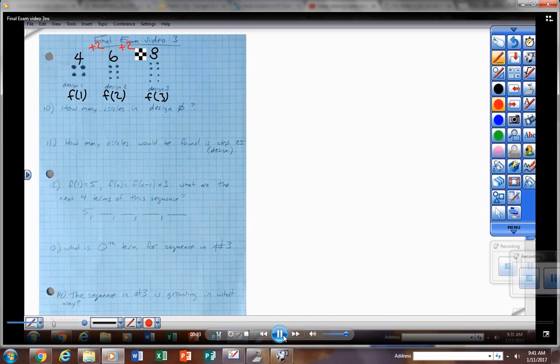So first thing I need to do is find out how much I'm going up by each time, and I'm going up by two. So that is d equals two. That is an arithmetic sequence, adding two each time. To find design zero, I'm going to backtrack. So if I'm adding two going to the right, I'm going to subtract two going to the left.